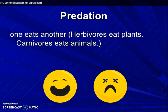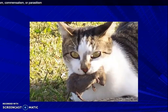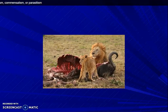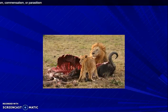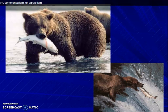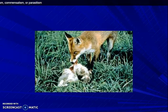The next topic is predation — one organism eats another. For example, herbivores eat plants and carnivores eat animals. In this picture, you can see how the predator and prey are interacting, and in this picture, these are the predators.